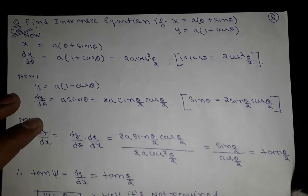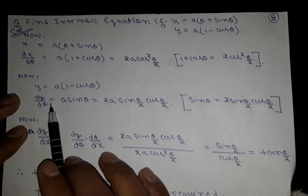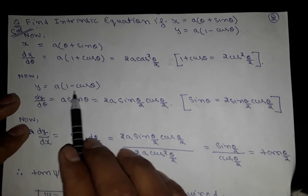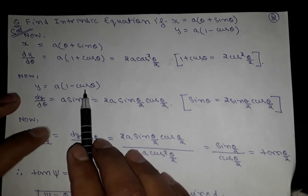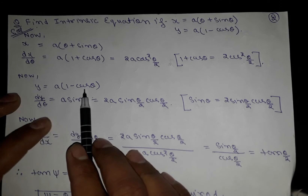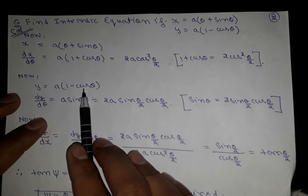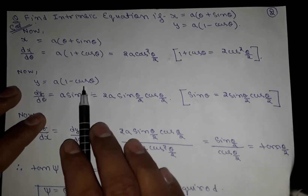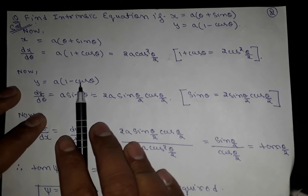Now y = a(1 - cosθ). We will differentiate it. We know that 1 - cosθ = 2sin²(θ/2), so we will use that identity.